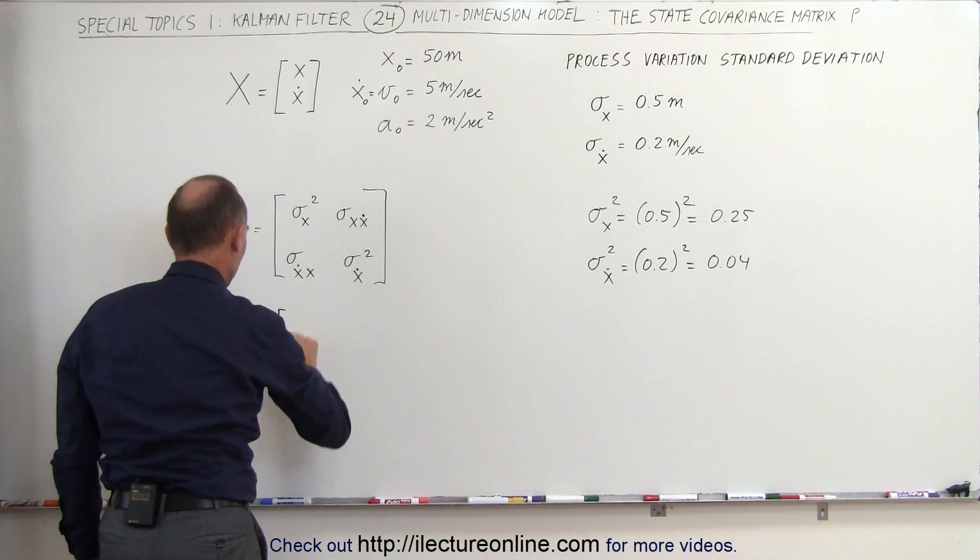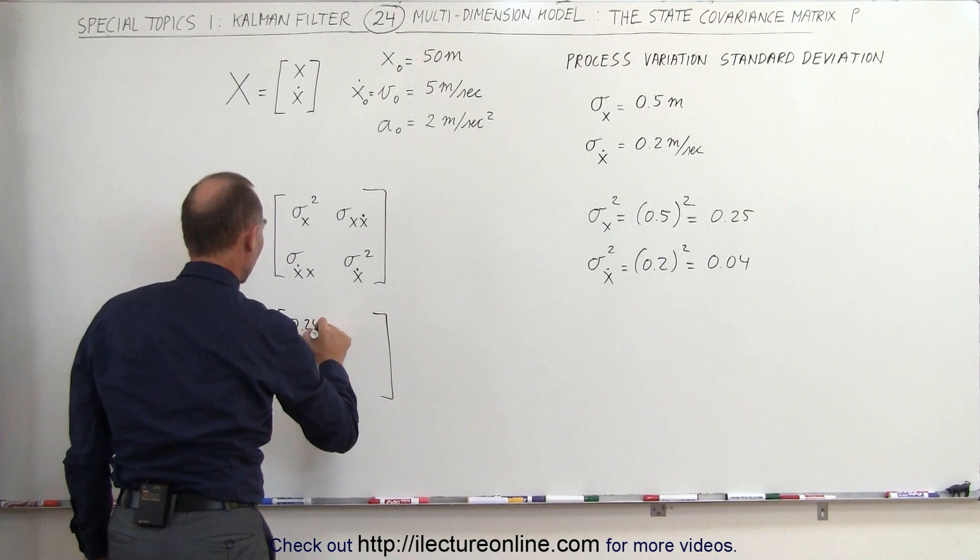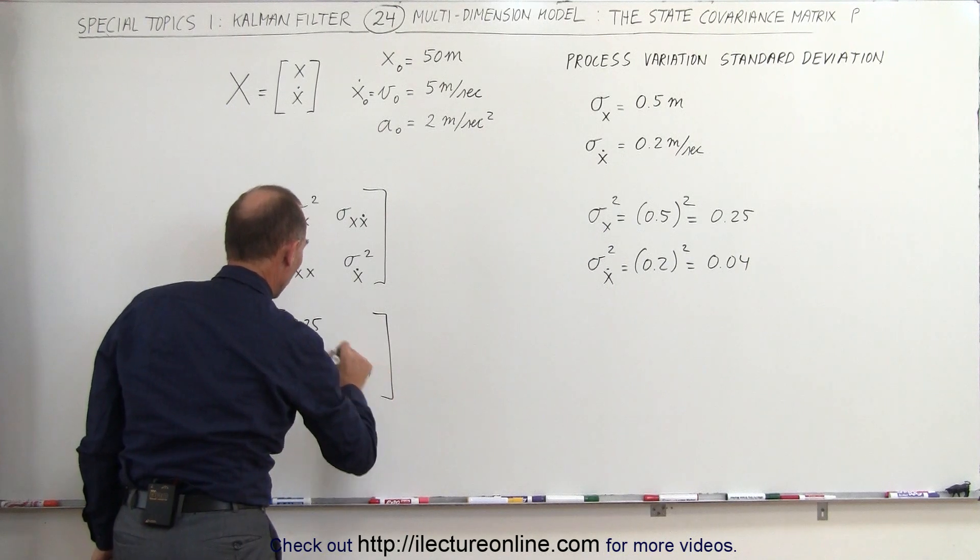The state covariance matrix then looks like this. On the diagonal we get 0.25 and 0.04.